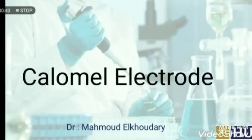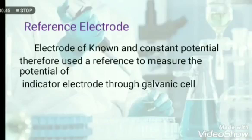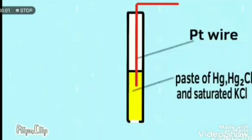An example is the standard calomel electrode. The reference electrode is an electrode of known and constant potential, therefore used as a reference to measure the potential of the indicator electrode through the galvanic cell. We are going to discuss the saturated calomel electrode.